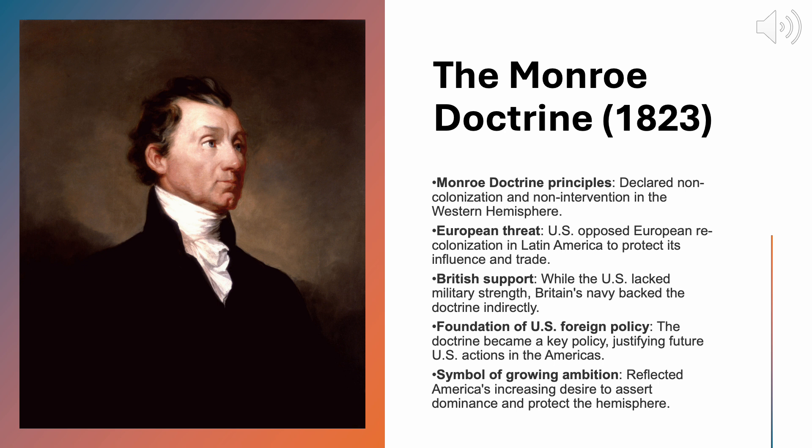Though the US at the time lacked the military strength to enforce the doctrine, it was effectively backed by Britain's powerful navy, which shared an interest in keeping European rivals out of Latin American markets. Over time, the Monroe Doctrine evolved from a statement of principle into a cornerstone of American foreign policy. It was invoked to justify US actions across the hemisphere, from the Mexican-American War to later interventions in Cuba, Puerto Rico, and Central America. Initially symbolic, the doctrine reflected America's growing ambition and sense of responsibility as a protector of the Western Hemisphere.